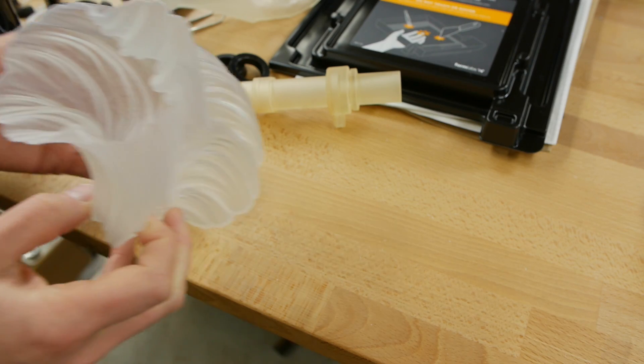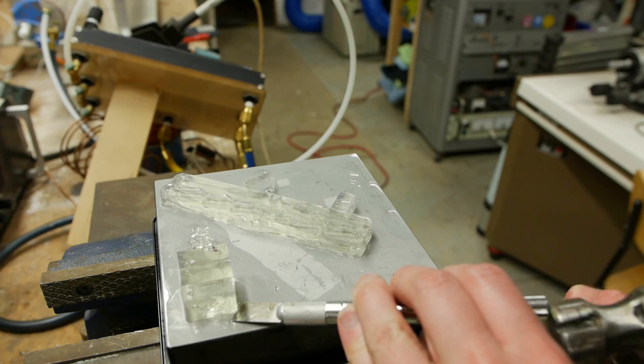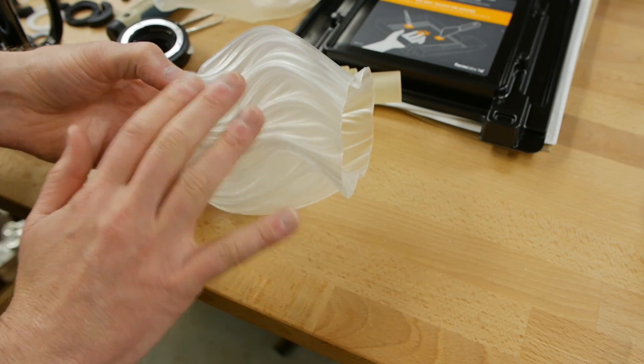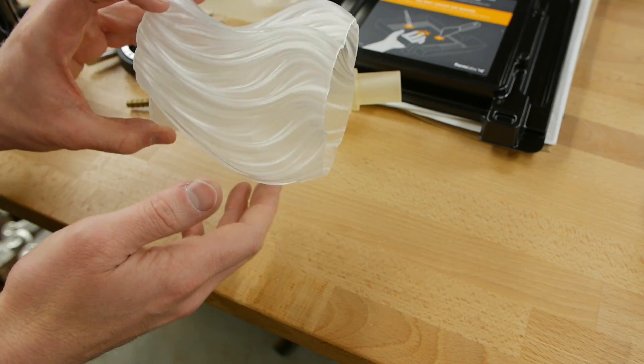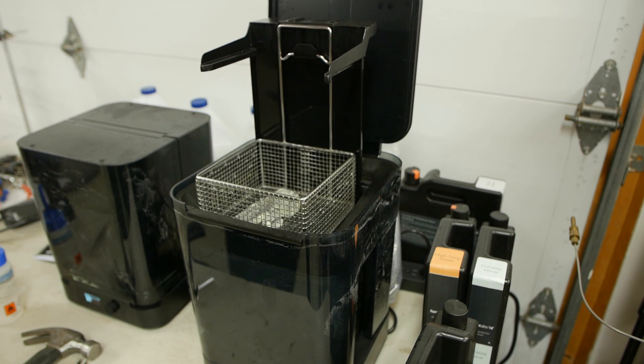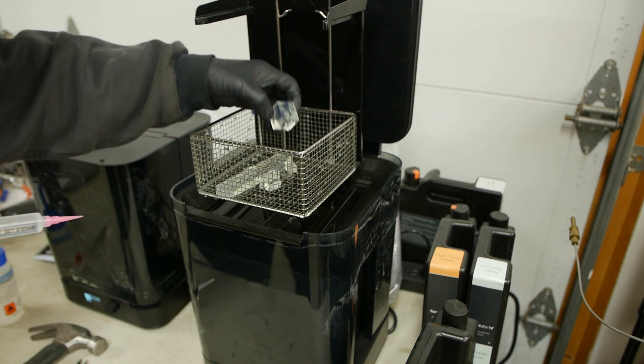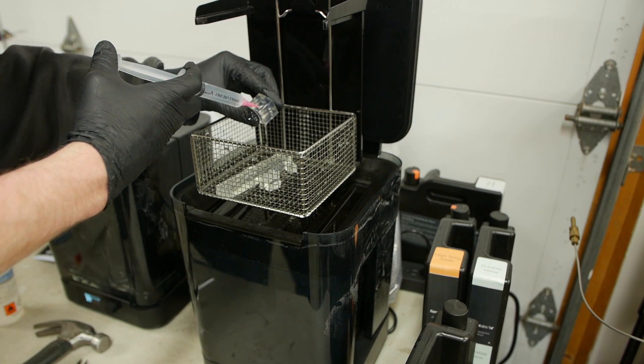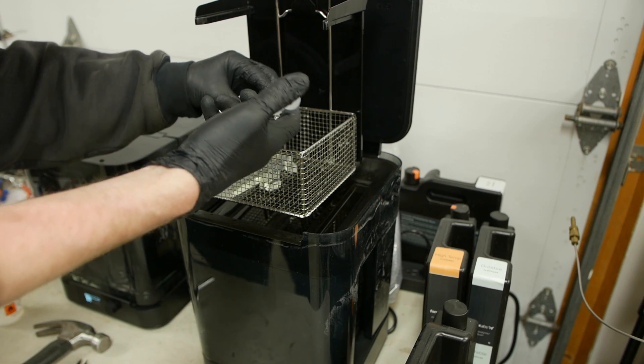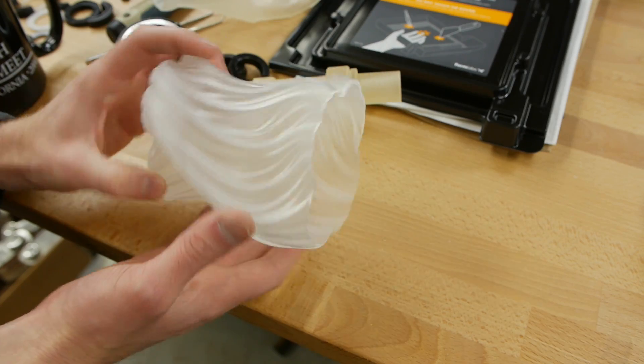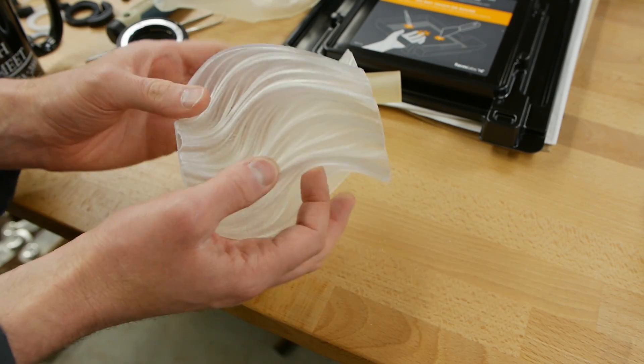In any case after the printer is done the item is covered in uncured resin because it's pulling it out of this puddle of stuff so it's completely coated in uncured resin. Luckily getting it off is pretty easy you can just dunk the part in isopropyl alcohol and Formlabs even makes a specialized washer that you can put your parts into and it swirls the isopropanol around.